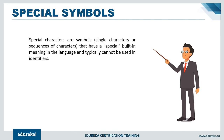Special symbols are single characters or sequences that have a special built-in meaning in the language and typically cannot be used in identifiers. For example, the ampersand (&) is used in printf and scanf statements to locate the address of a variable. The modulus symbol (%) is used with data types — %d for integer, %s for string. Basic examples of special symbols include modulus, ampersand, and brackets.